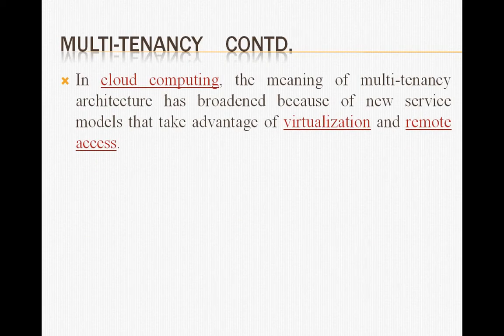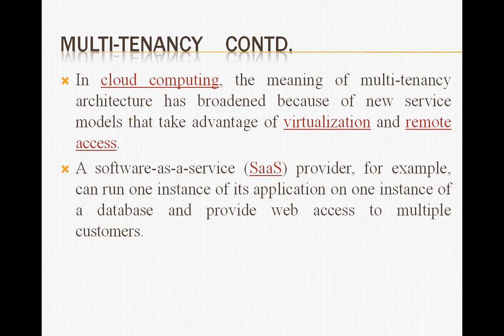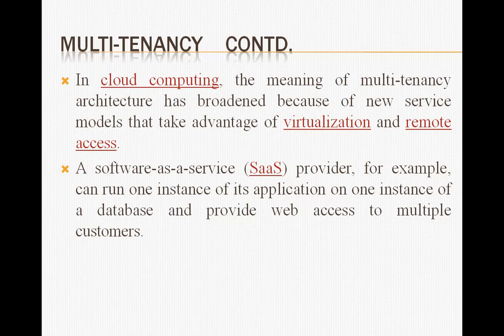Multi-tenancy has broadened the scope of cloud computing because of a new service model. It takes advantage of virtualization — which we have discussed in previous lectures — and remote access via internet services. It provides software as a service via software providers. For example, most people simultaneously access internet browsers like Google Chrome or Opera, and these provide web access to multiple customers simultaneously. The basic concept behind this is multi-tenancy.